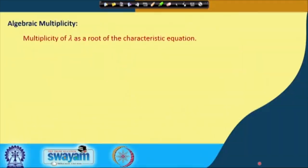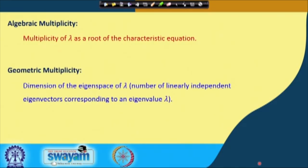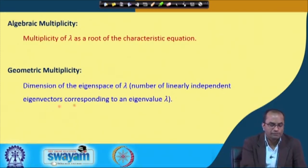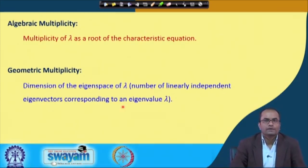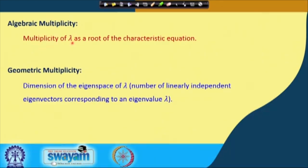What is the algebraic multiplicity? The algebraic multiplicity of lambda is its multiplicity as a root of the characteristic equation. The geometric multiplicity is the dimension of the eigenspace of lambda — that means the number of linearly independent eigenvectors corresponding to an eigenvalue lambda.